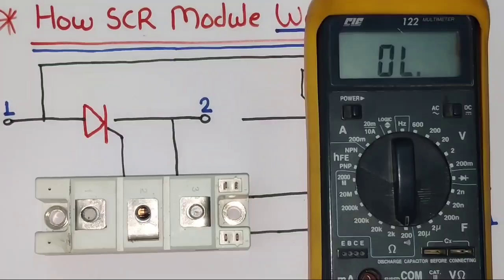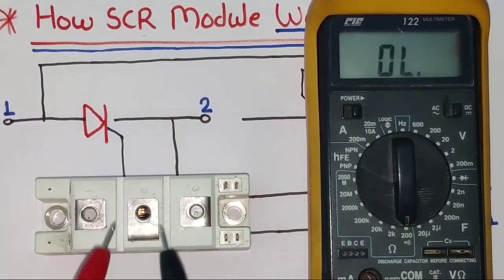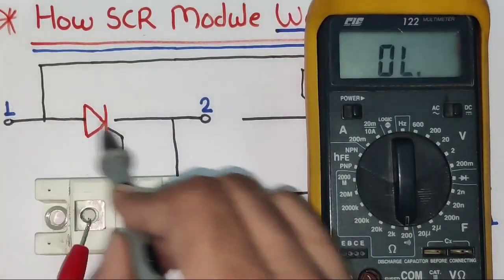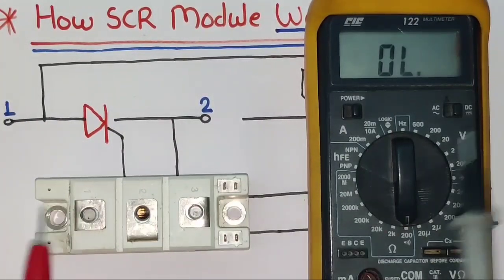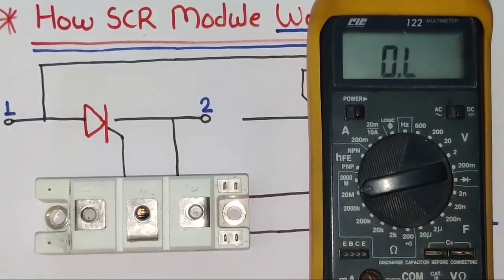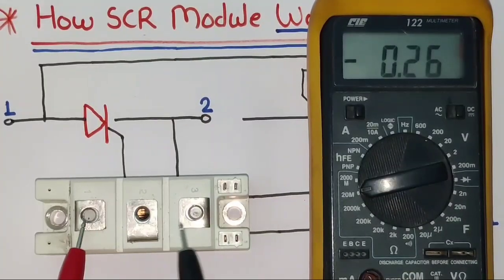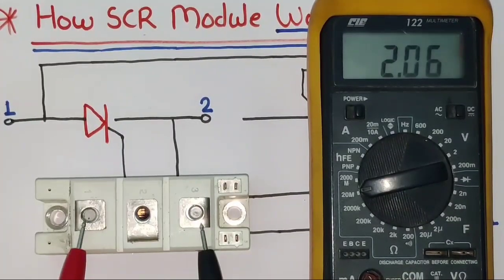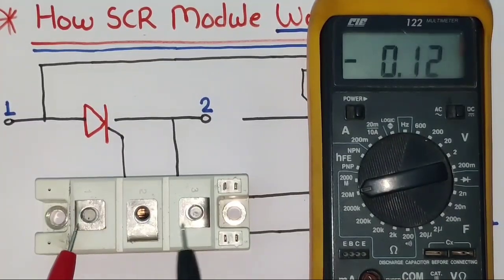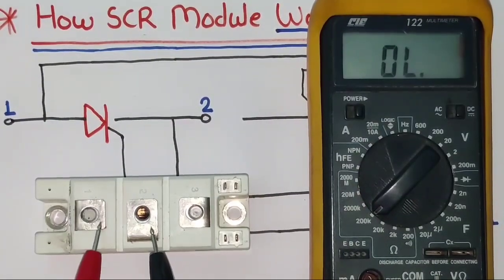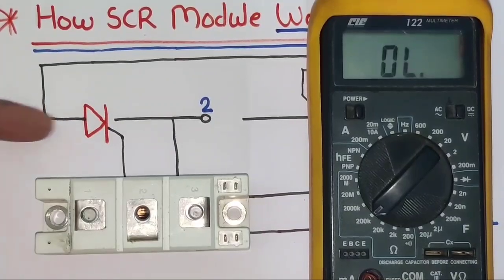Now let's understand how it works. First we set the multimeter on continuity range. In this condition, between terminals 1 and 2, no resistance should show — resistance between 1 and 2 should be in mega ohms, not kilo ohms, not ohms. Also between 1 and 3, resistance should come in mega ohms. When you check resistance in kilo ohm range, it should show open loop — no resistance should show.